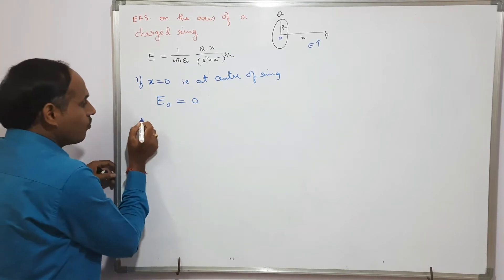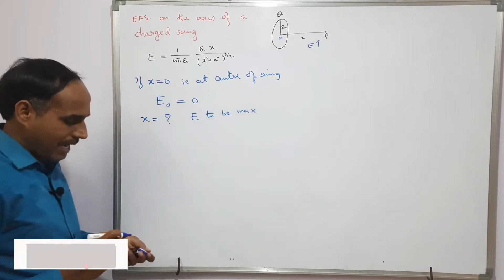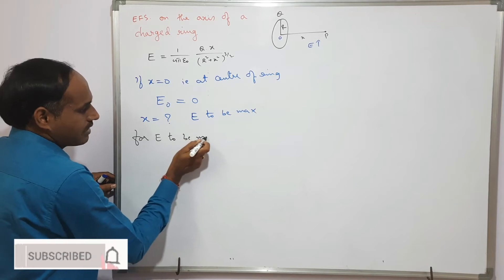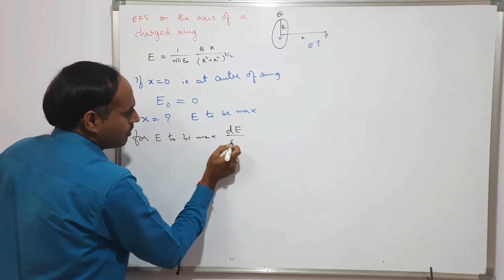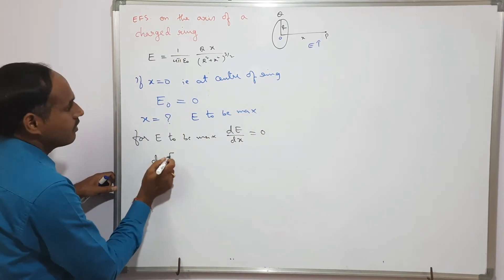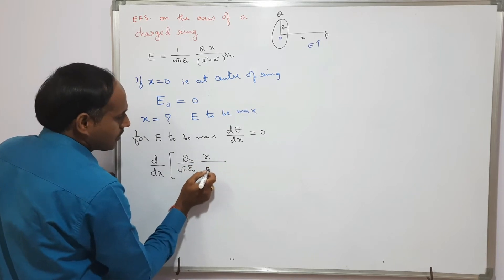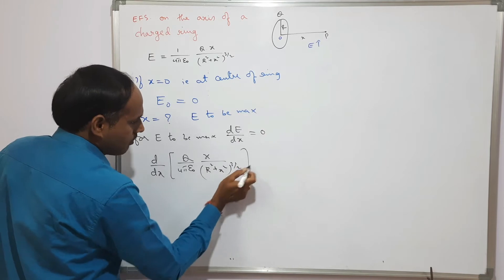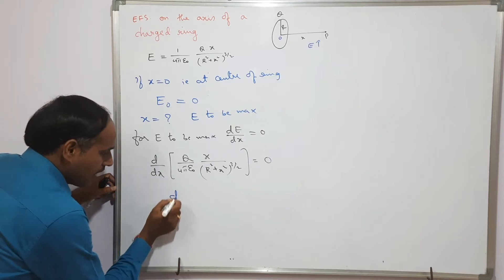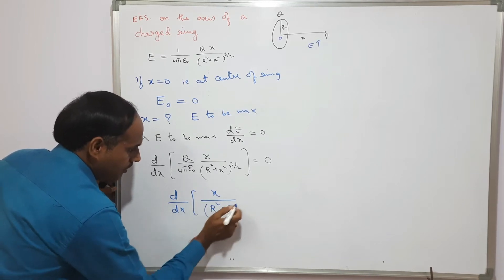The question is: at what distance does E become maximum? For E to be maximum, dE/dx must equal zero. So we differentiate: d/dx of (1/4πε) times qx over (r² + x²)^(3/2) equals zero. Since q/4πε is a constant, we need d/dx of x over (r² + x²)^(3/2) equals zero.